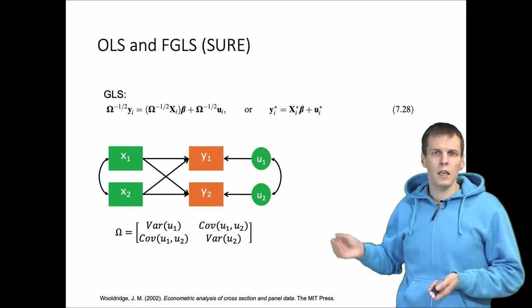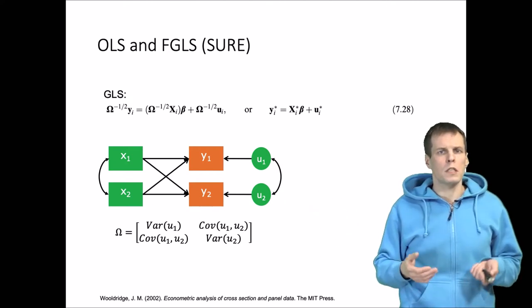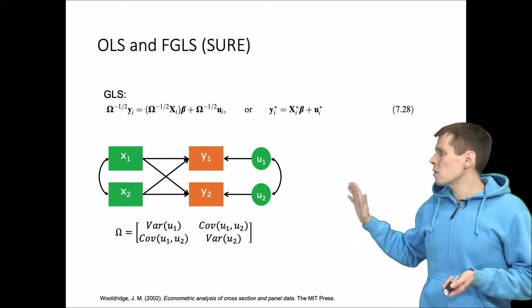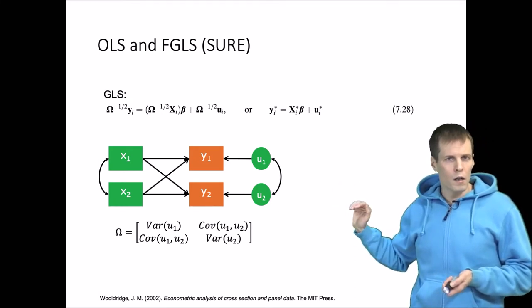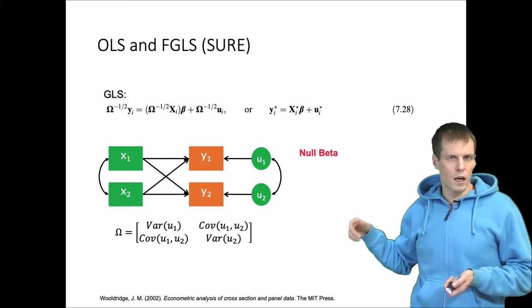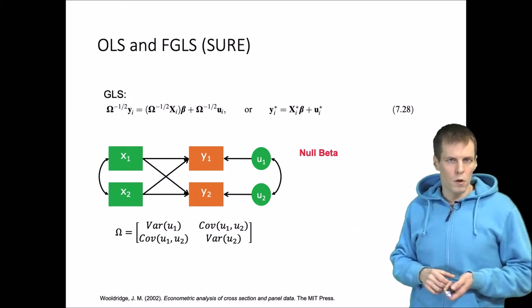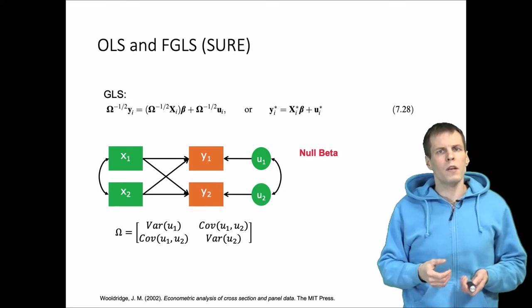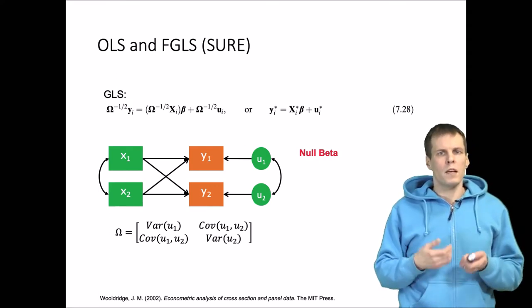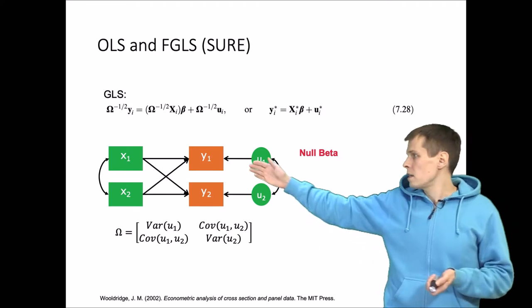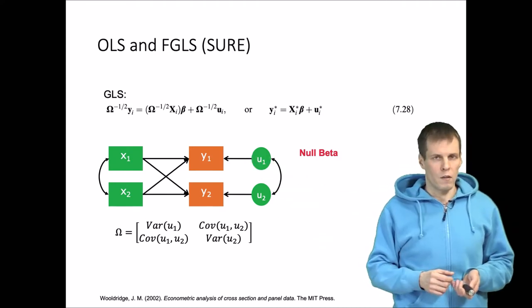The omega here is calculated based on the estimated covariance matrix of the error terms. The assumptions are that the null beta identification criterion holds. What that means is that there can be no paths between endogenous variables. So when a variable is endogenous, it cannot be a predictor of any other variable.